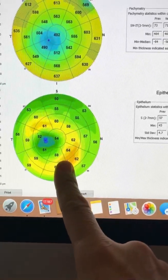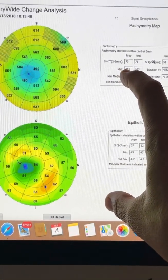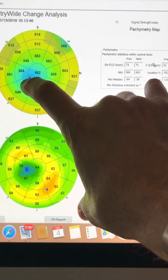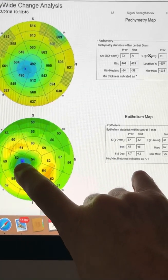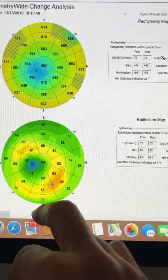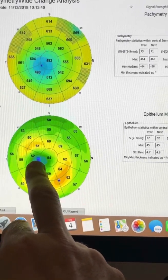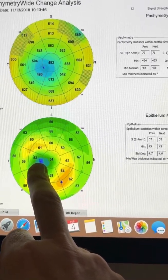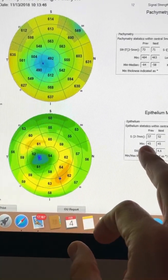We have her measurements here from 2018. And her minimal thickness is 464 microns, obviously at the thinnest part of the cornea, which is the peak of the cone as well. And we can also see how, at that time, the epithelium over that area was the thinnest. The thinnest epithelium that she measured back then was 45 microns. Actually, the blue color here, she's probably between 35 and 40 microns.